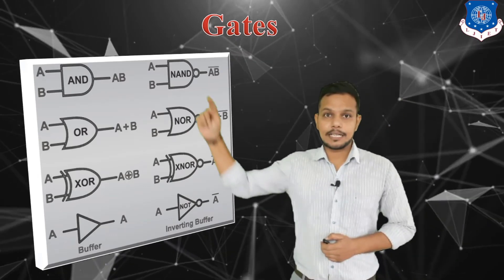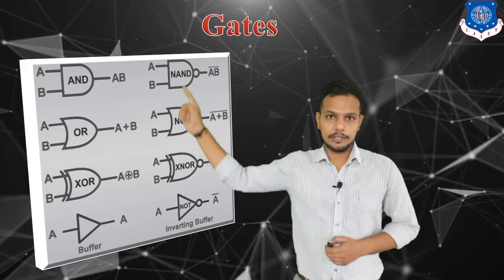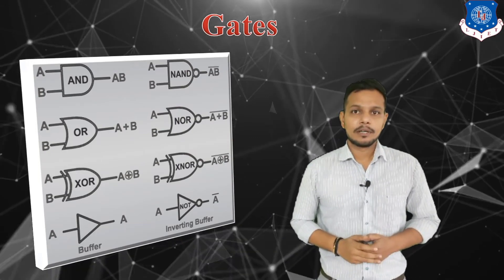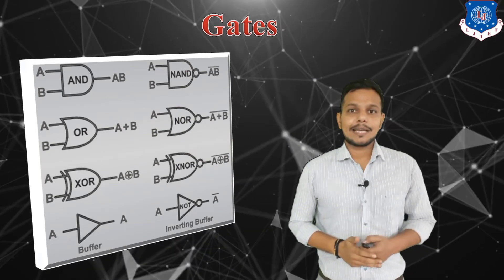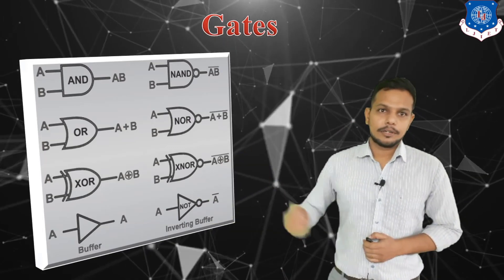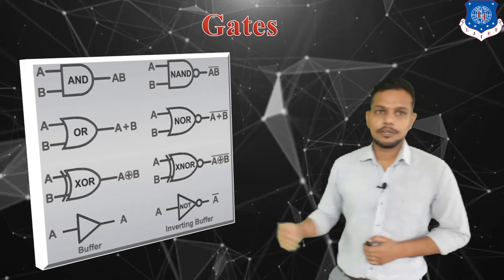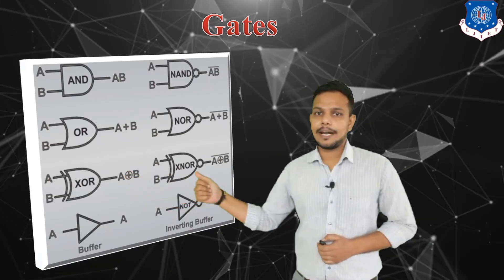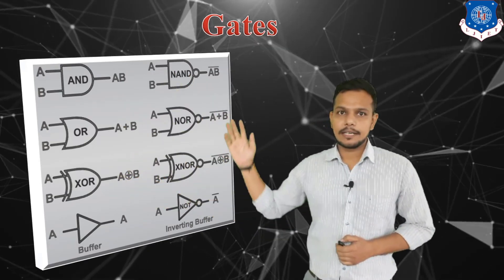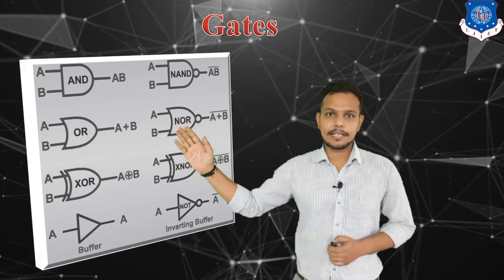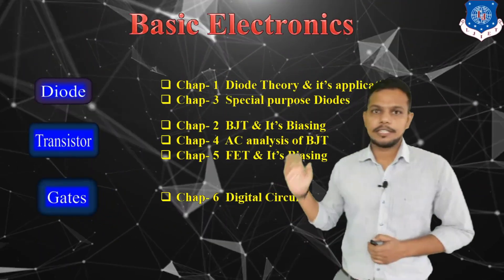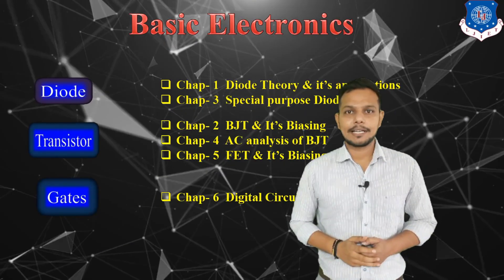In universal gates we have NAND gate and NOR gate. Both are universal gates — they are called universal gates because we can make any type of gate with the help of universal gates. The last one is derived gates, in which we discuss XOR and XNOR gates. This is all the information about gates. In this chapter we are going to discuss about gates and their different types of circuits. This is all about the introduction of basic electronics.